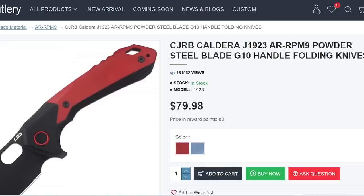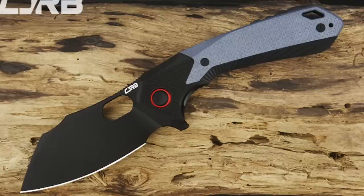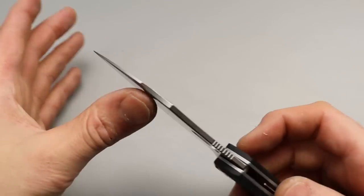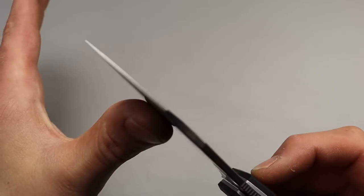Starting this off with this new CJRB. This one actually is a prototype that I was able to get from their site. It is an ARR PM9 steel, their proprietary powdered steel.